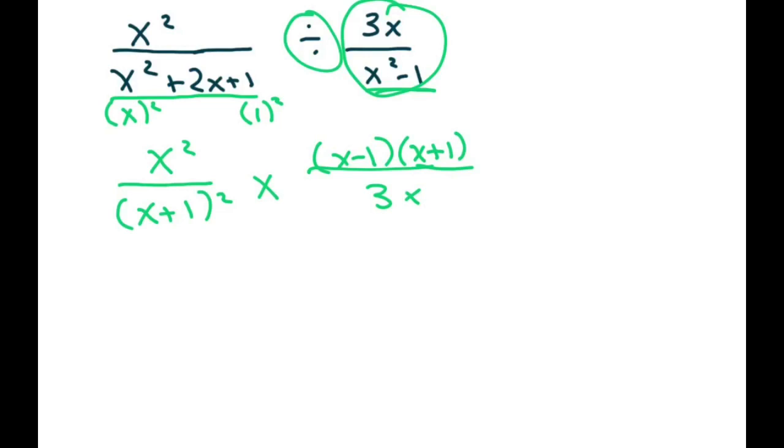So basically what we have is, I'm going to go ahead and write my x's out too. Two x's here, then we have x plus 1 times x plus 1 times x minus 1 times x plus 1 over 3x.